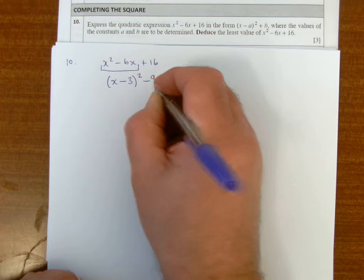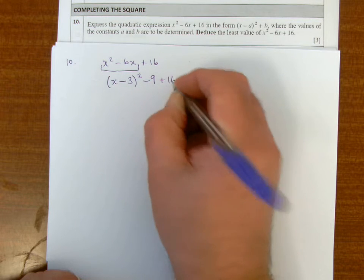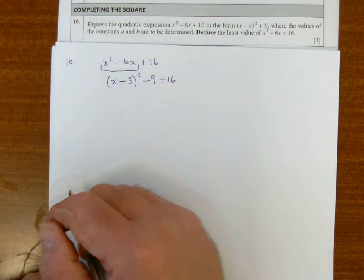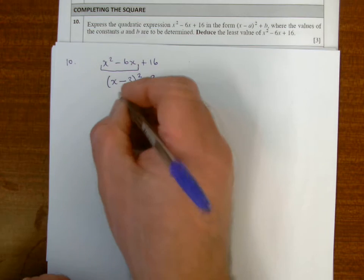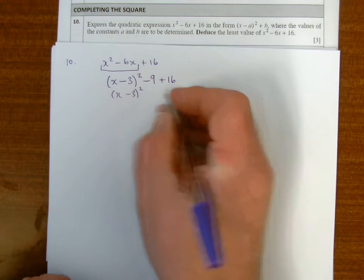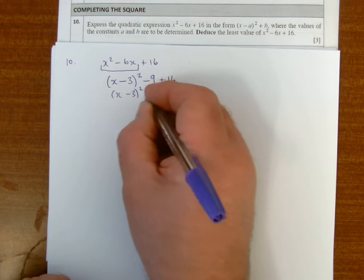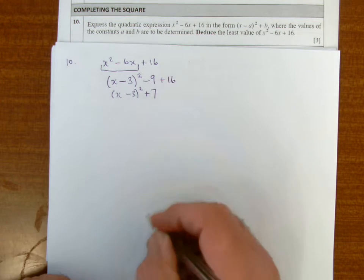So I need to subtract 9 and then add on the 16. So those two lines are exactly the same value. So it's x minus 3 all squared, now minus 9 add 16 is plus 7.